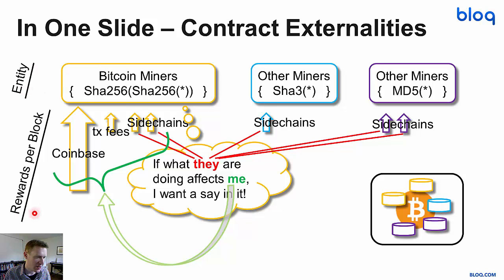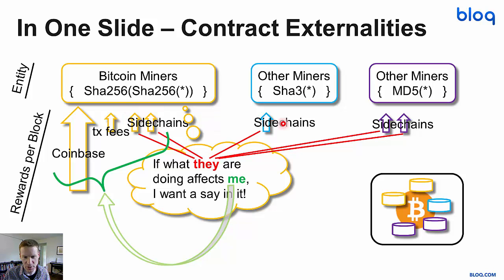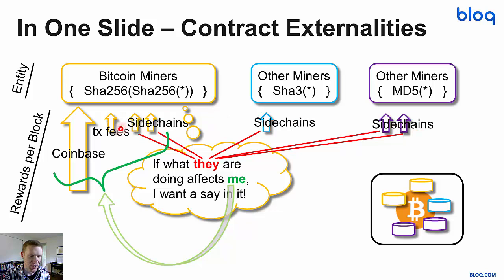These are the rewards that each entity gets per block that they mine. The Bitcoin miners get a Coinbase transaction, which is currently 25 Bitcoins — it's about to be halved to 12.5 Bitcoins per block — and they also get the transaction fees from the Bitcoin network. Presumably they also get either transaction fees or some other kind of payment from their sidechains. And presumably these miners also get some kind of payment from their sidechains. These are little arrows to represent the flow of money in and out of what's going on. These sidechains may affect the value of all of this to each entity.